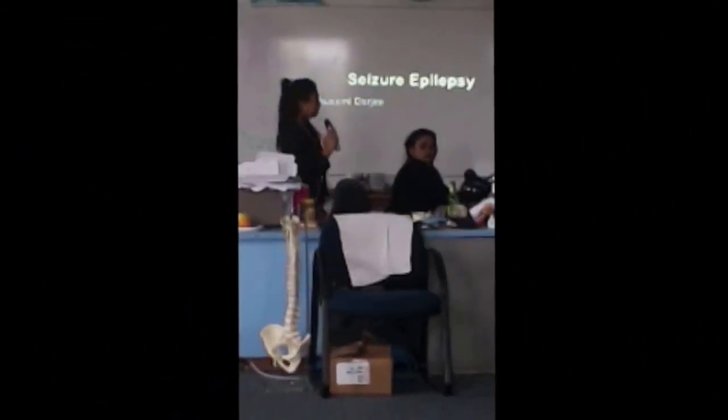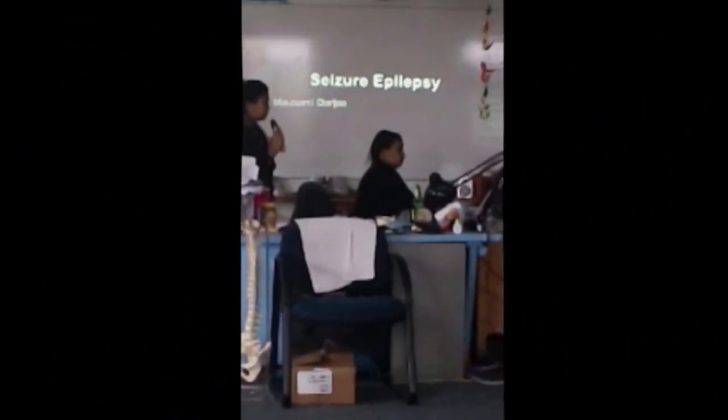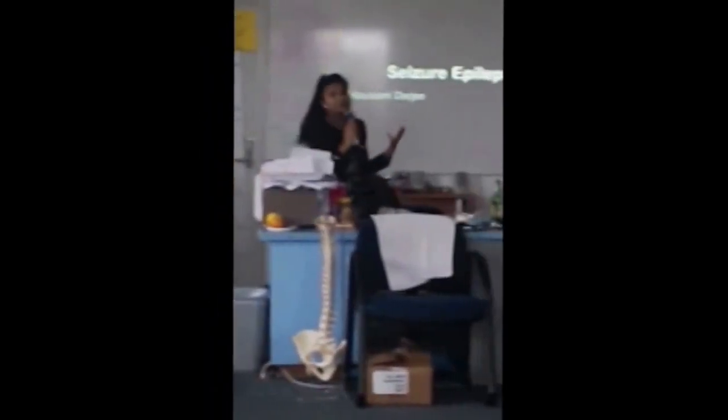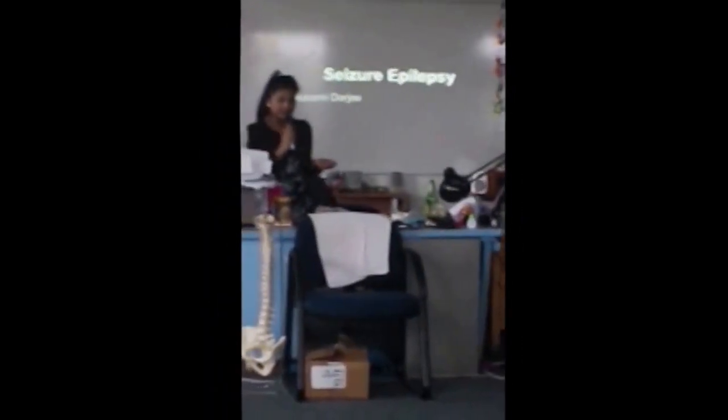First of all, I want to talk about what a seizure is. So a seizure is an absent period of time that occurs in the brain because of abnormal electrical activities, which can cause changes in people's behaviors. There are many types of seizures but these are the common types.